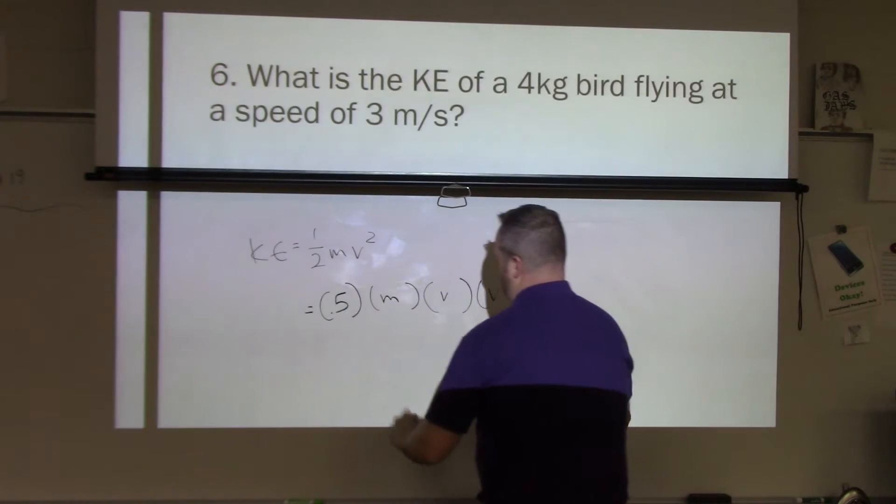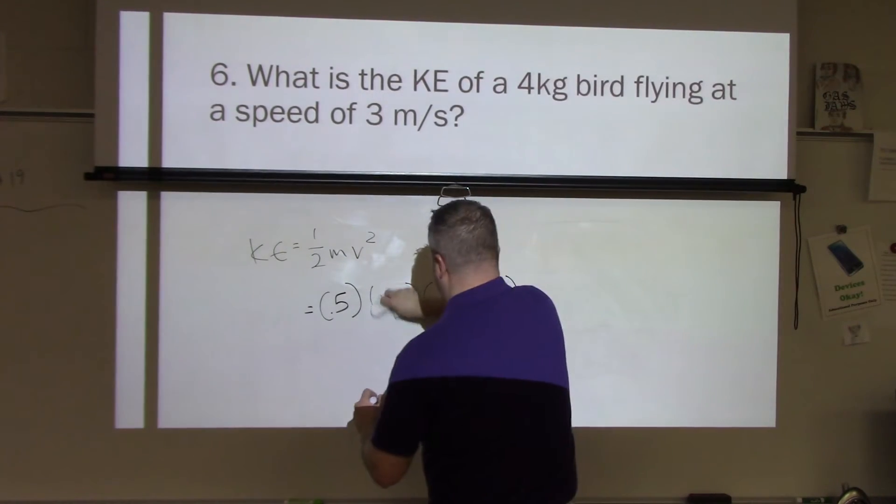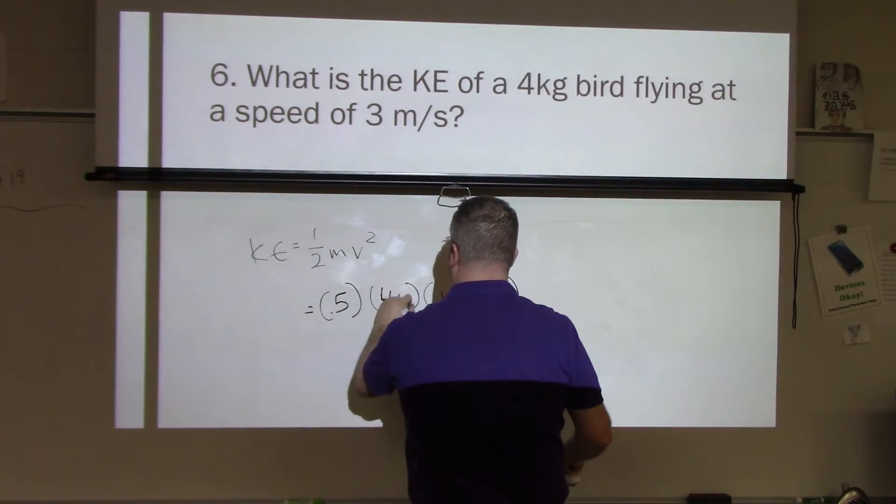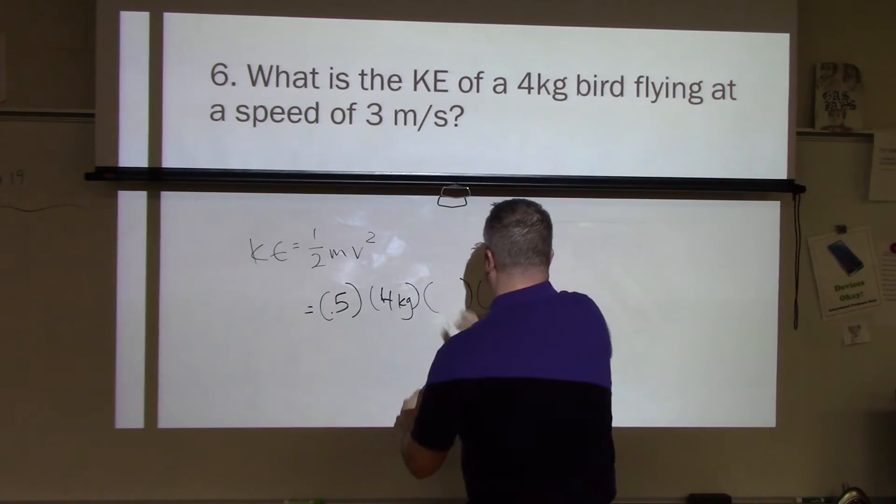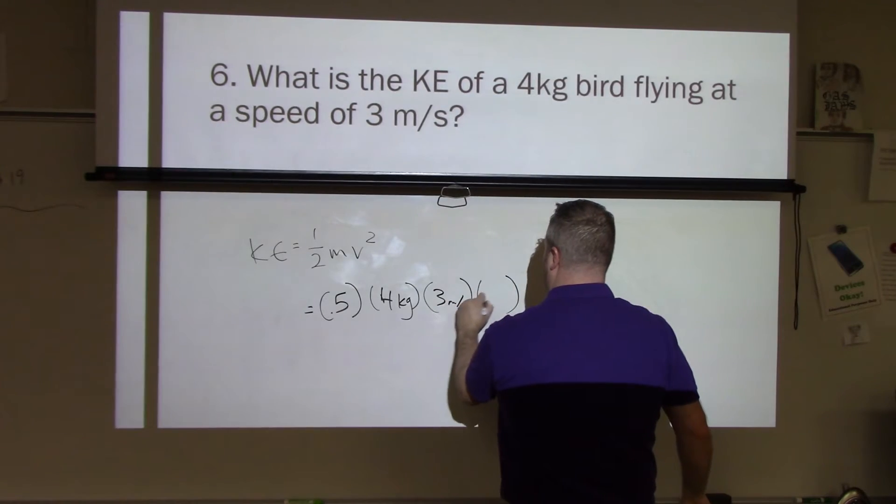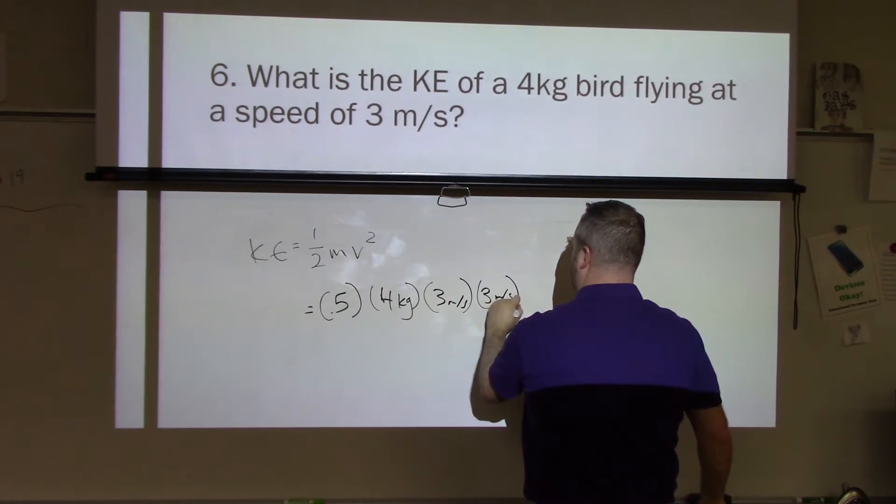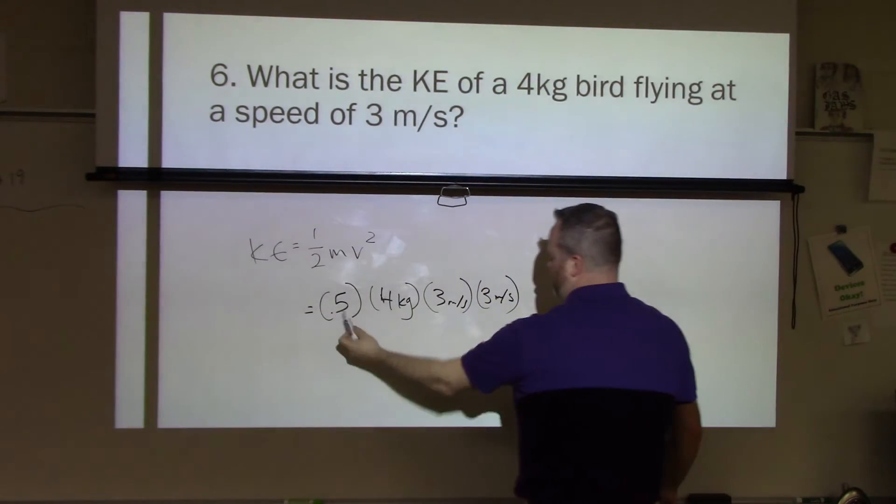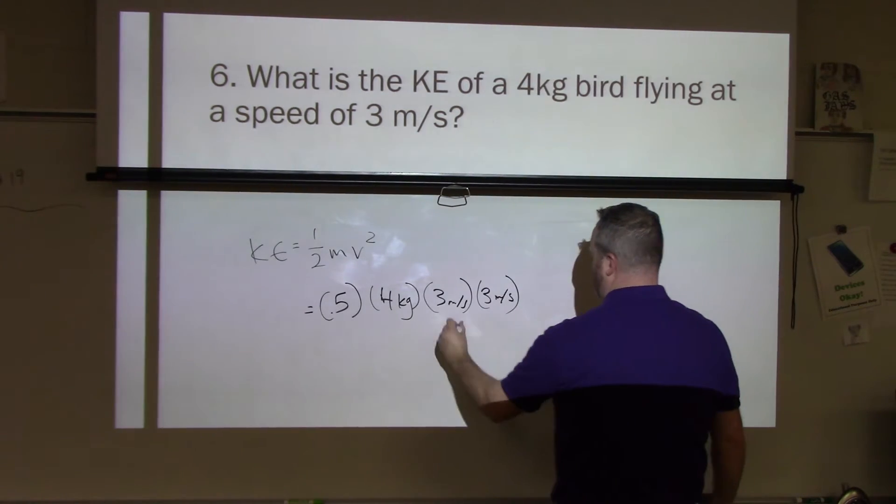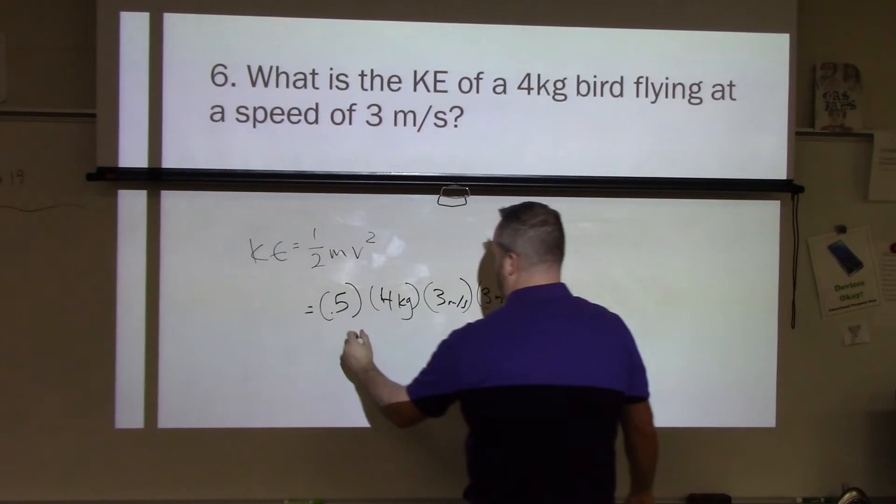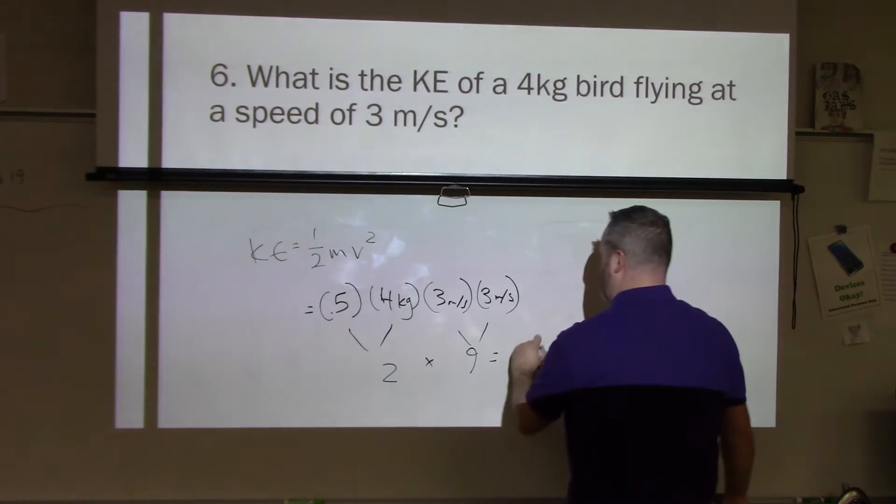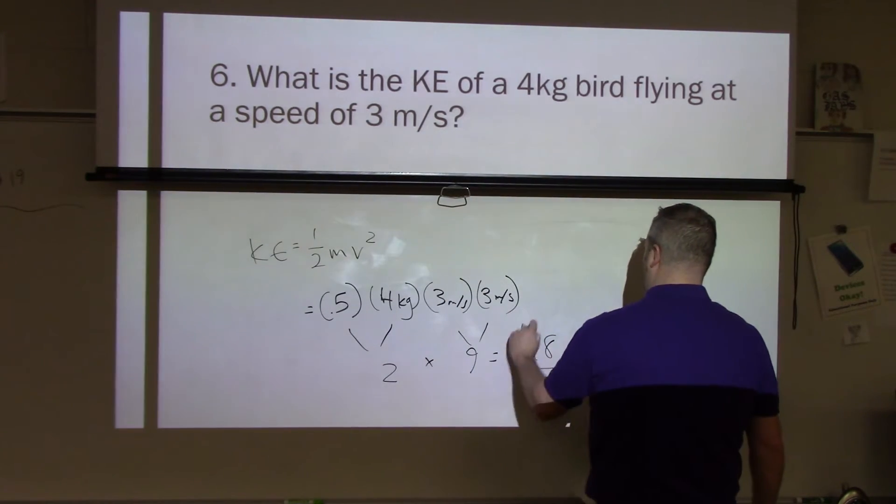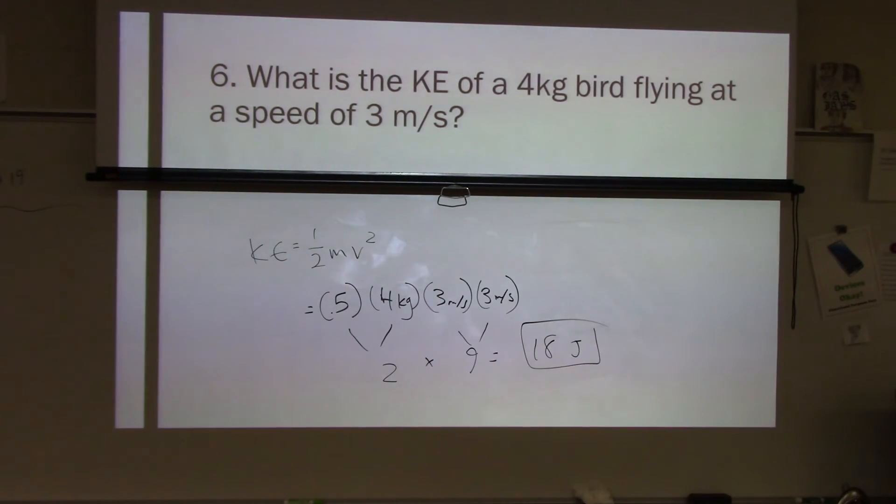So, I'm changing this to 4 kilograms. And I'm changing my speed or my velocity right here. I'm going to change that to 3. Alright, so now I have 0.5 times 4 times 3 times 3. 3 times 3 is 9. 0.5 times 4 is 2. And 2 times 9 is 18 joules. So my answer here is 18 joules.